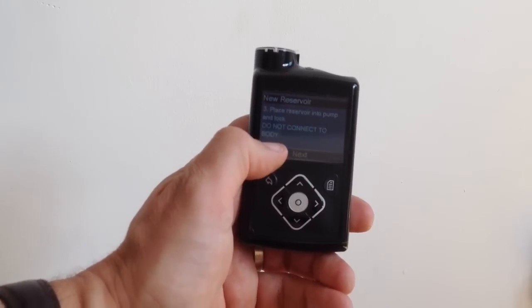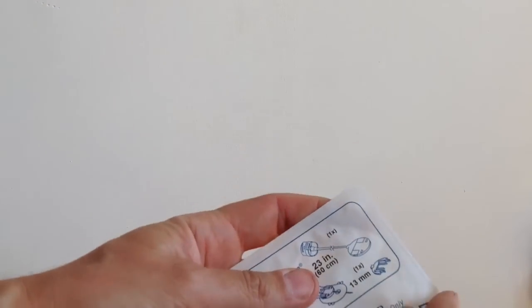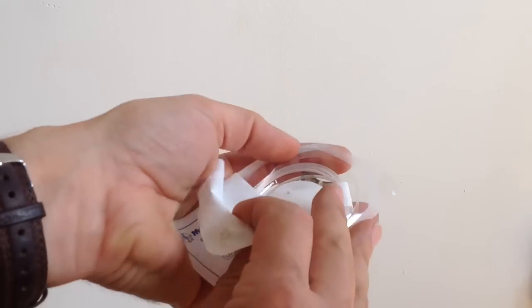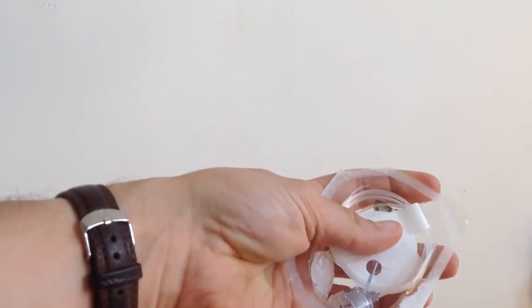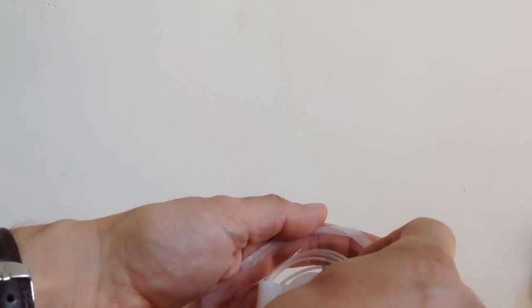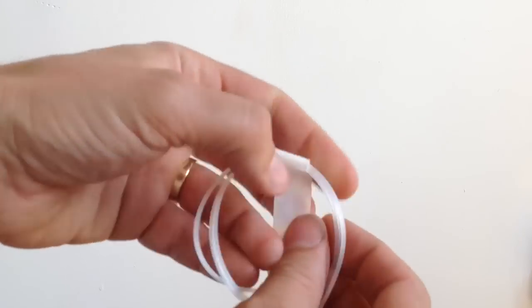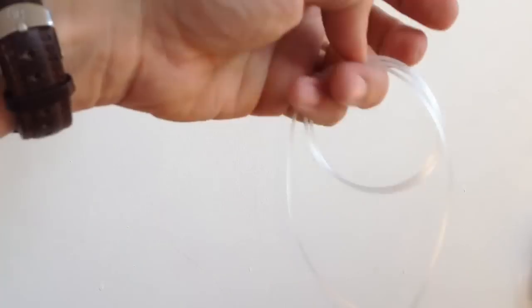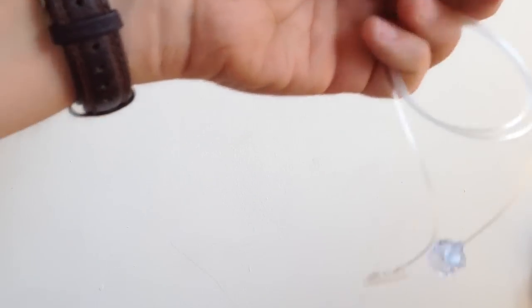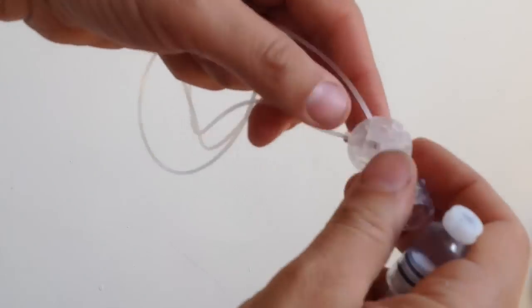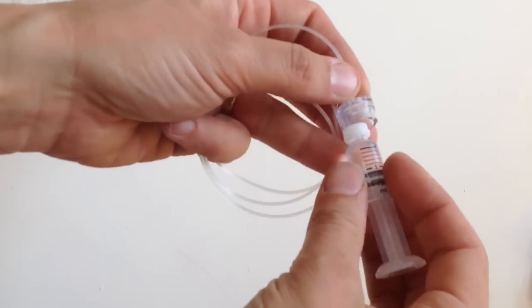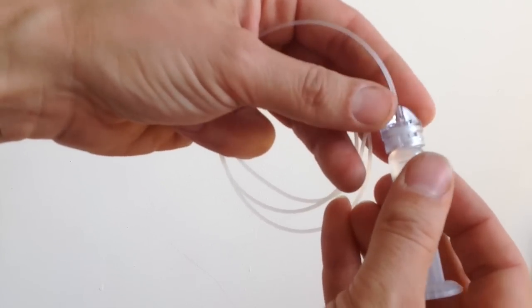Next, you place the reservoir into the pump and lock, but you don't connect anything to the body. So, of course, now, I need to have my infusion set open. Like that. And I'll just get the tubing out. Like that. Put that to one side.